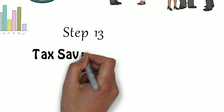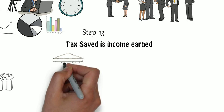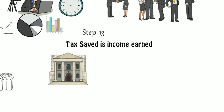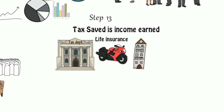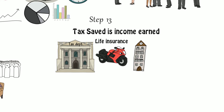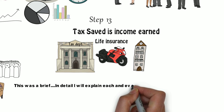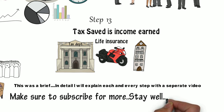Step number 13: Tax saved is an income earned. With all that money that you can earn and make profit out of, you will have to pay taxes. And I'm not telling you to not pay taxes, but utilize whichever option that you get to minimize that tax limit. If there is life insurance, vehicle insurance, residential insurance, any other policies that can evade you or put you up to an extension of a certain tax amount, utilize that. This was just a brief. In detail, I will be able to explain each and every step through another video, so make sure to subscribe to this channel. Till then, stay well, stay wealthy.